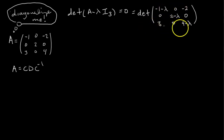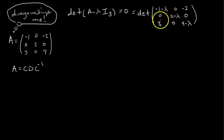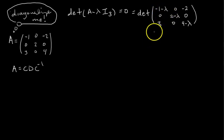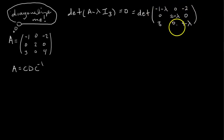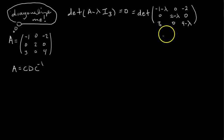Now the question is, this looks pretty hairy — how do we get the determinant of this matrix? You could try row reduction to make it upper triangular, but how do you get rid of this 3 when there's a lambda up here? The best answer would be cofactor expansion. We see this second row has zeros everywhere except one entry, so the cofactor expansion would simplify a lot. Let's cofactor expand along the second row.